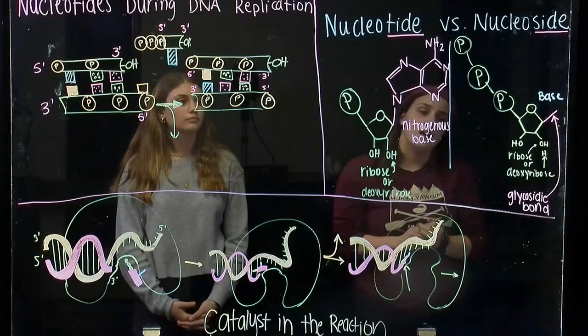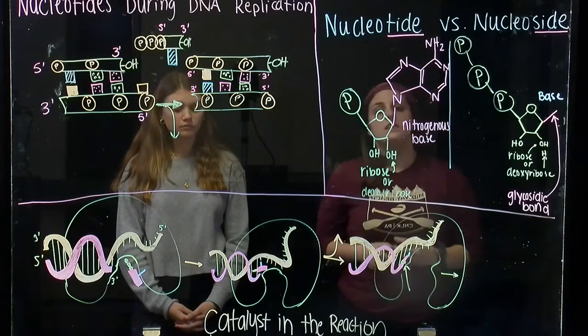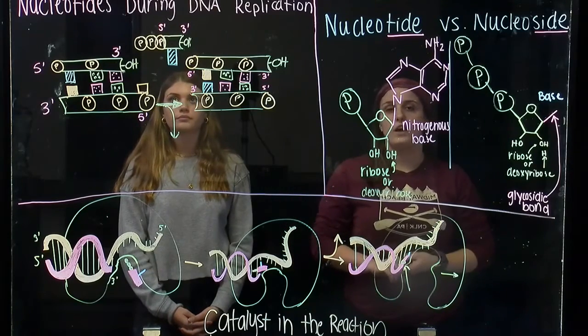An example of a nucleoside triphosphate is ATP. And for DNA replication, specifically DNTP is used, which just means the sugar is deoxyribose instead of ribose.